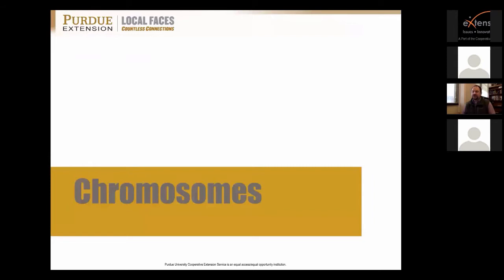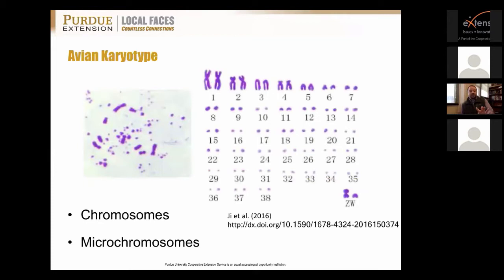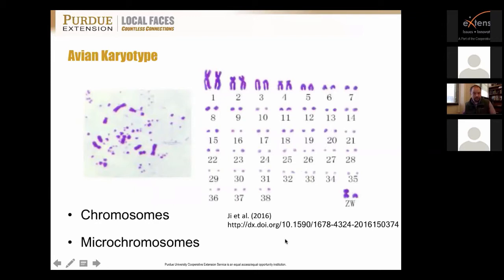Now let's talk about chromosomes. This is called the avian karyotype — a physical representation or picture of all the types of chromosomes present within a bird. Chromosomes 1 through 5 are the major or macro chromosomes, and 6 through 38 are termed micro chromosomes, something unique to birds. Down in the corner are Z and W, the sex chromosomes, very similar to the X and Y present in humans and other animal species.